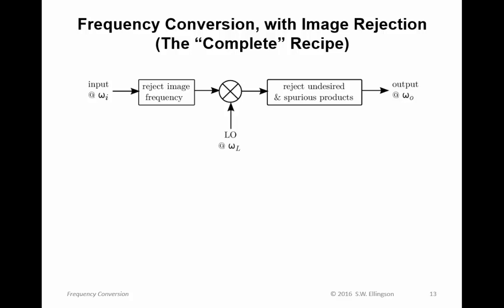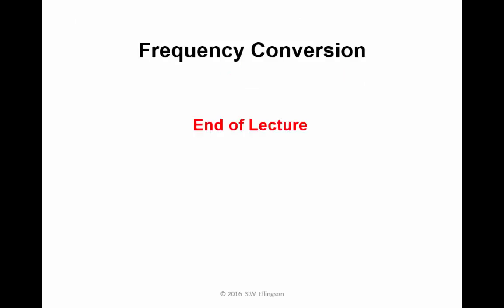Here is the complete recipe for frequency conversion, accounting for the image frequency problem. We still have a mixer and an LO with low side or high side injection. We must deal with undesired multiplication products and LO bleed-through. But now we also must consider rejection of the image frequency before the mixer. Those are the three parts you always have to consider when you do frequency conversion of this type. That completes this lecture on frequency conversion.